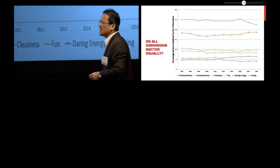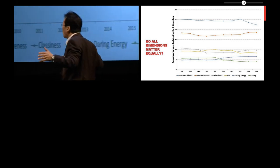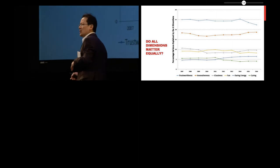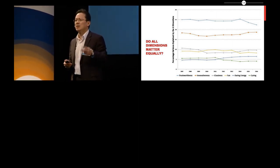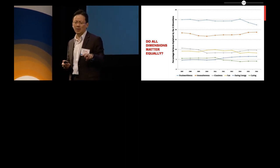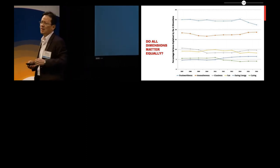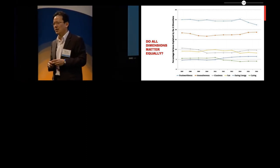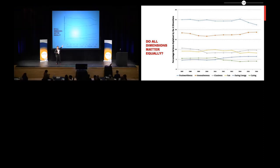And then you have a cluster of two more dimensions that are somewhat less important. This is the classiness dimension, so the luxury aspect of a brand, that's important. It is significant, but it's about a third of how important it is to be a trustworthy brand. That's tied with the fun element. And the last two dimensions at the bottom of this list would be the daring energy and the caring aspect of a brand. So if you want to plan to build strong brand character, this is already a roadmap that will give you a sense of, everything else being equal, what's going to carry more weight.